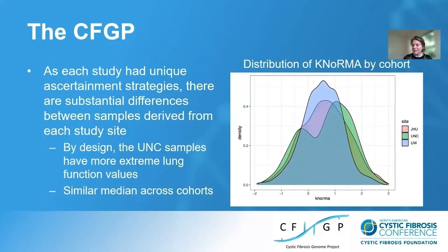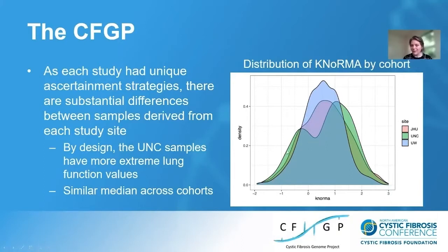Similarly, we see differences in the distribution of lung function values between study sites. The UNC sample includes the genetic modifier study, which ascertains patients with extreme lung function values — those with really good and really terrible lung function. That's why the green curve representing UNC is bimodal, with a deficit of people with average lung function values. That said, we see a similar median across the cohorts.